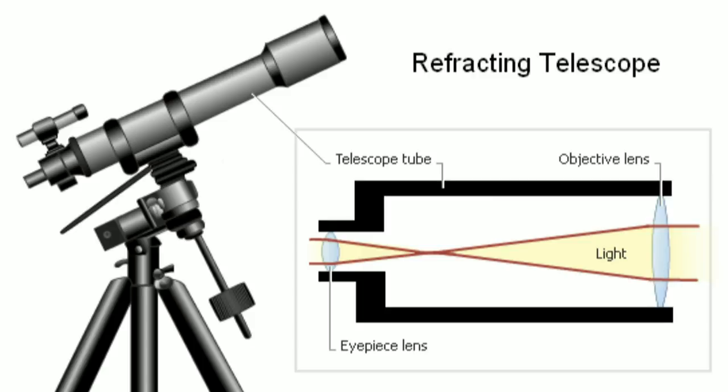A refractor bends light using a lens. The light enters the telescope through the lens, passes down a tube, and is focused into an image in front of an eyepiece. Refractors have been around for a long, long time. Hans Lippershey invented the telescope, but Galileo used a refractor to look at the craters on the moon, discover the phases of Venus, and discover the Galilean moons around Jupiter — with a very simple, small refractor telescope. Think: glass lens.